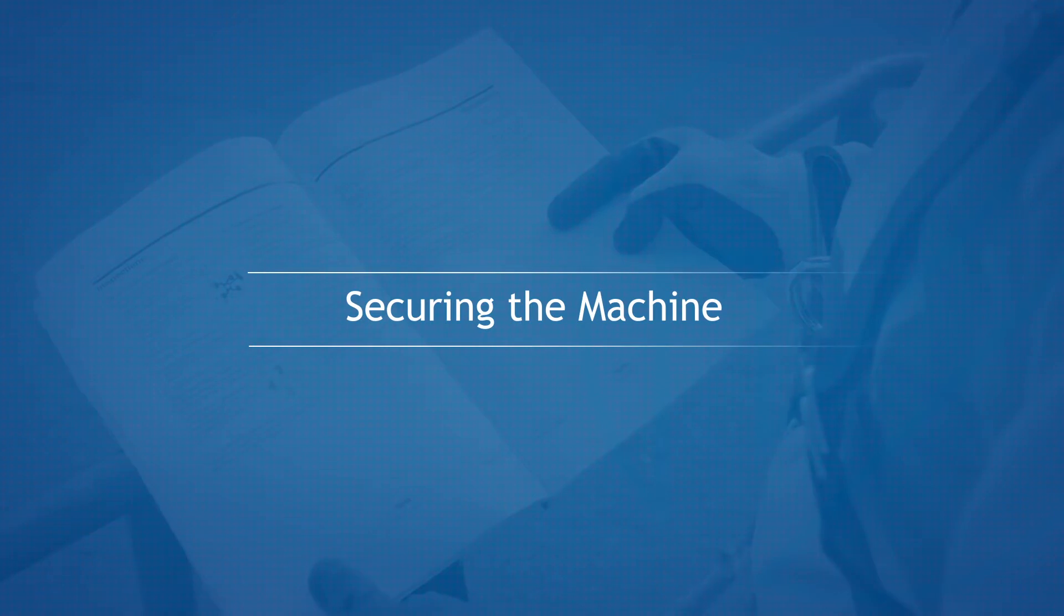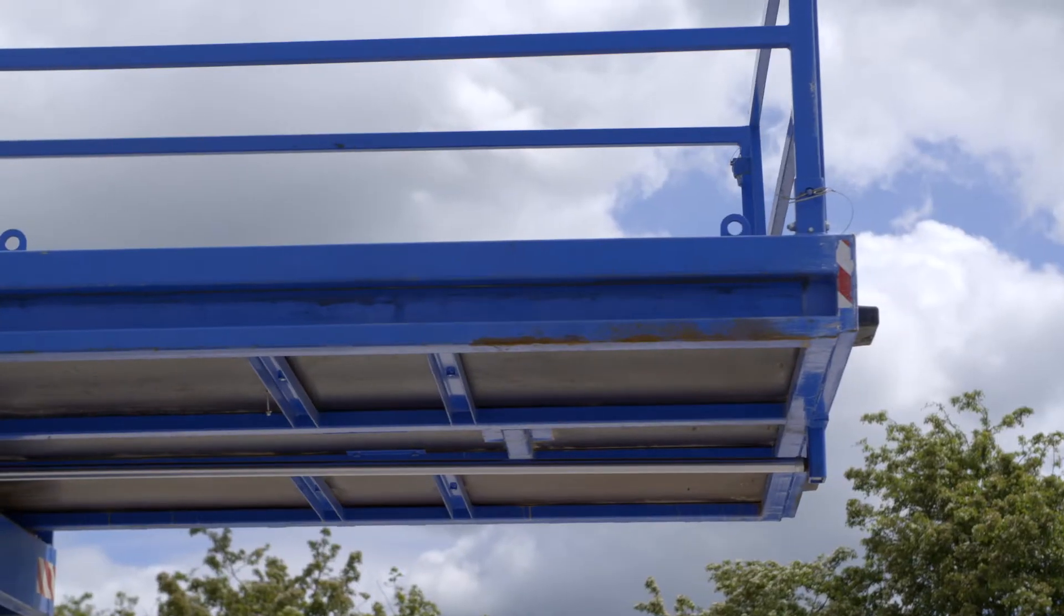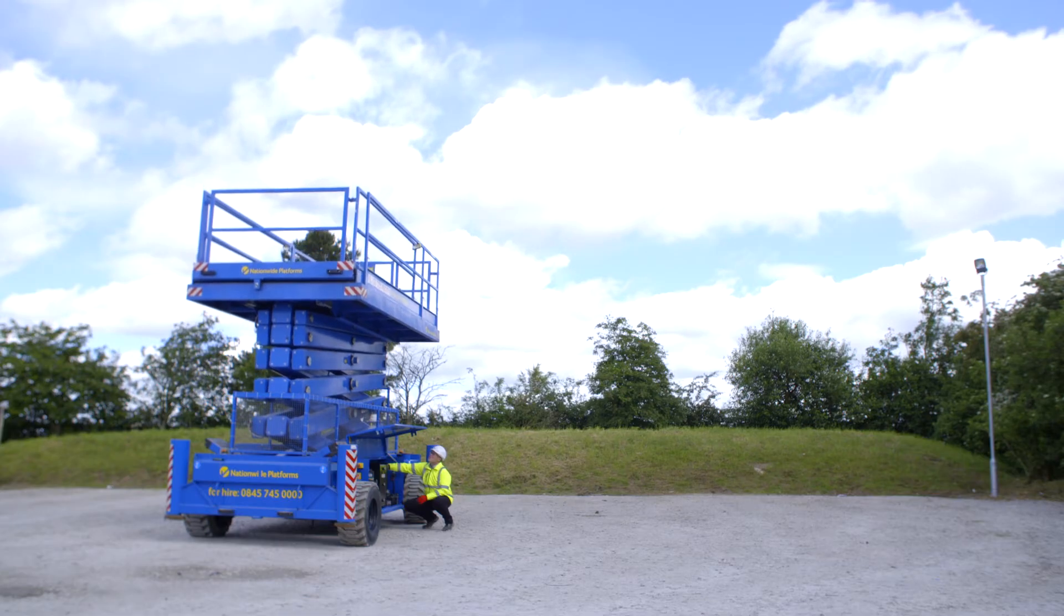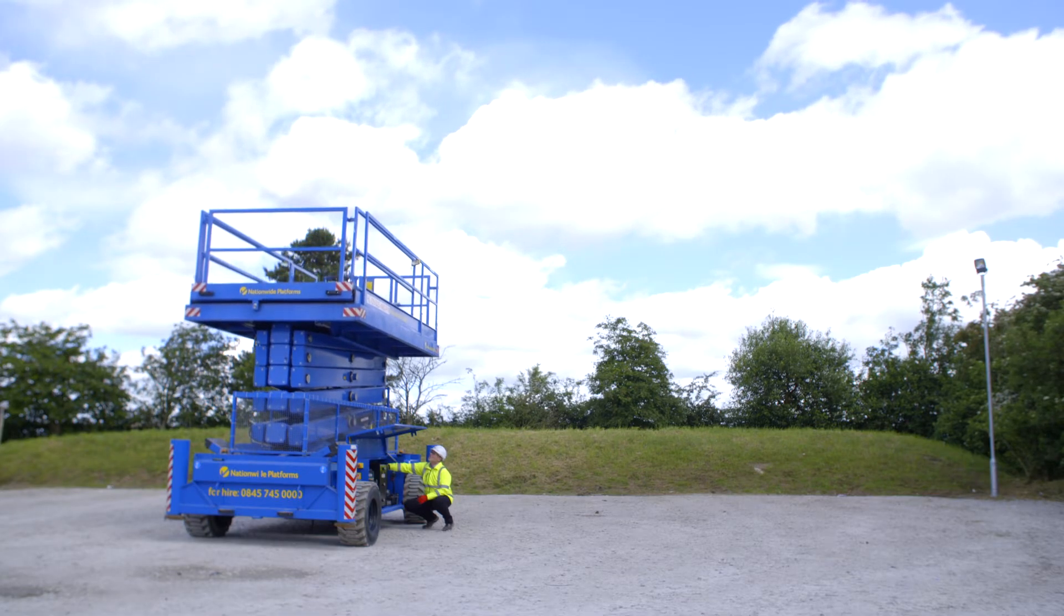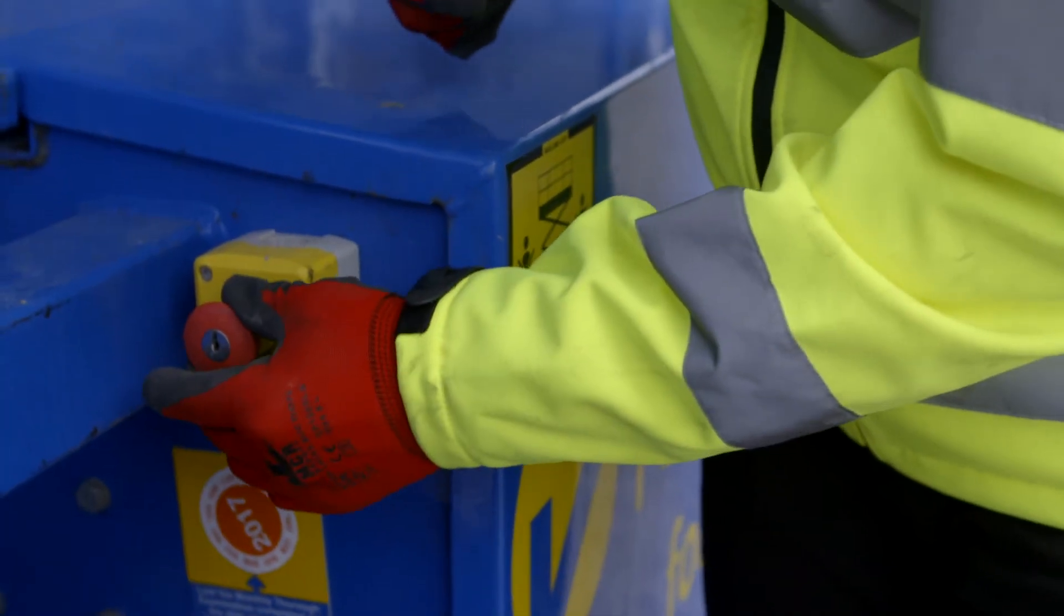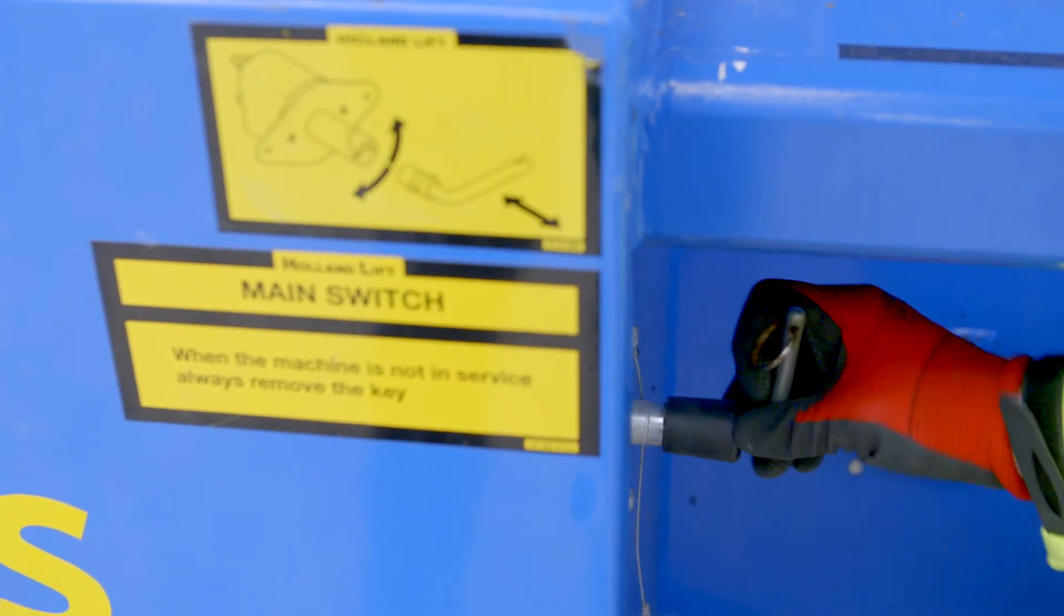Securing the machine: At the end of use, retract the extension deck and lower the platform. Park the machine in a secure designated location, push the ground emergency stop button in and remove the key. Finally, turn the main isolator off.